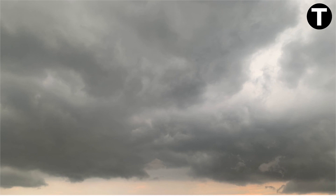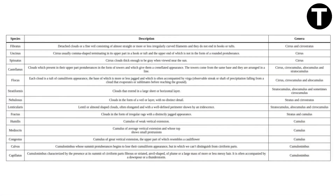Let's dig even deeper. The 14 species of clouds add intricate details to our cloud atlas. They range from fibratus to capillatus, each contributing a unique touch to the sky's canvas.